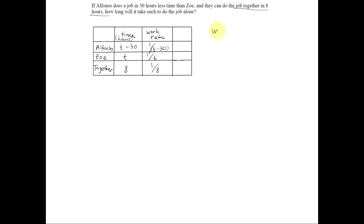With work rate problems, we add each of the work rates, so work rate one plus the work rate of the second equals the work rate they could do together. So let's go ahead and set that up. We have 1 over t minus 30 plus 1 over t equals 1 eighth.